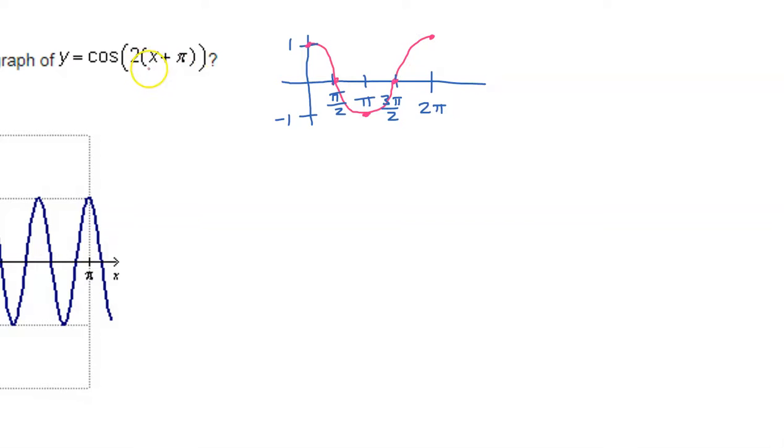Alright, now, this graph has a couple of modifications. I see that it has a b value right here. That is going to change the period. So, let's check that out. The period is always going to be two pi divided by the b value. So that means that the period is going to be two pi divided by two. That means the period is going to be pi.